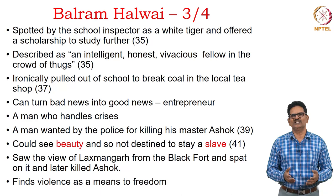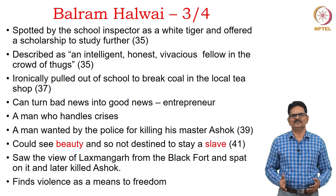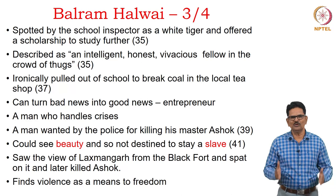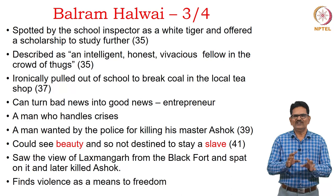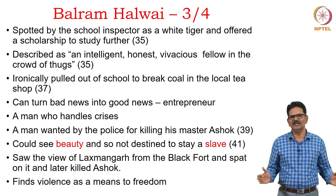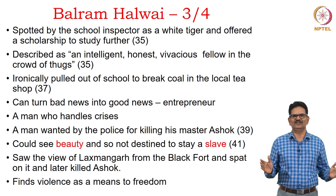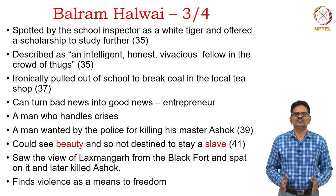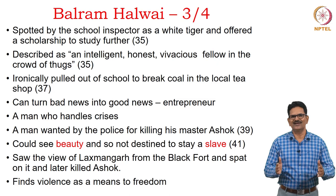Balram can handle any kind of crisis. He is a man wanted by police for killing his master Ashok and escaping with his money. A very beautiful idea from the novel: he could see beauty, and so he was not destined to be a slave forever — beauty and slavery don't go together. When a man can see beauty, he can escape slavery. Poor Balram from Laxmangarh saw beauty, learned about it, and broke away from his slavery. He finds violence as a means to his freedom.